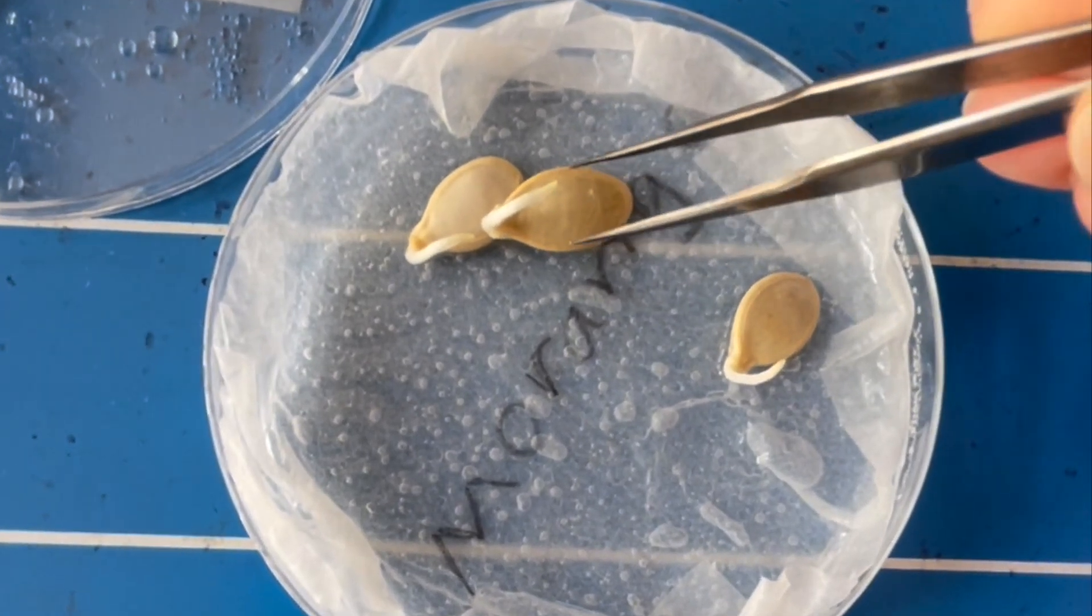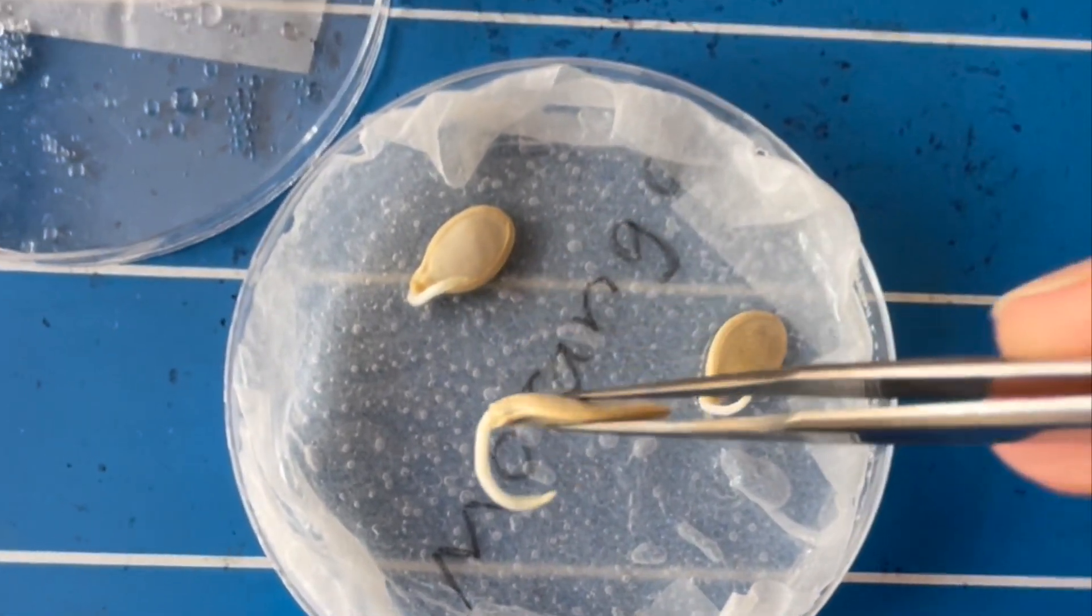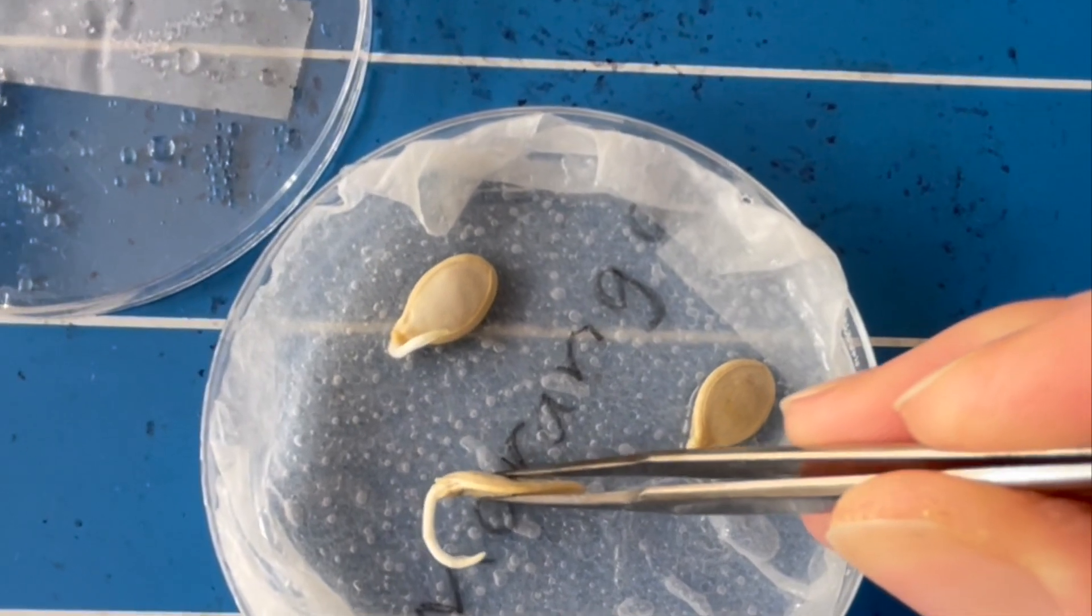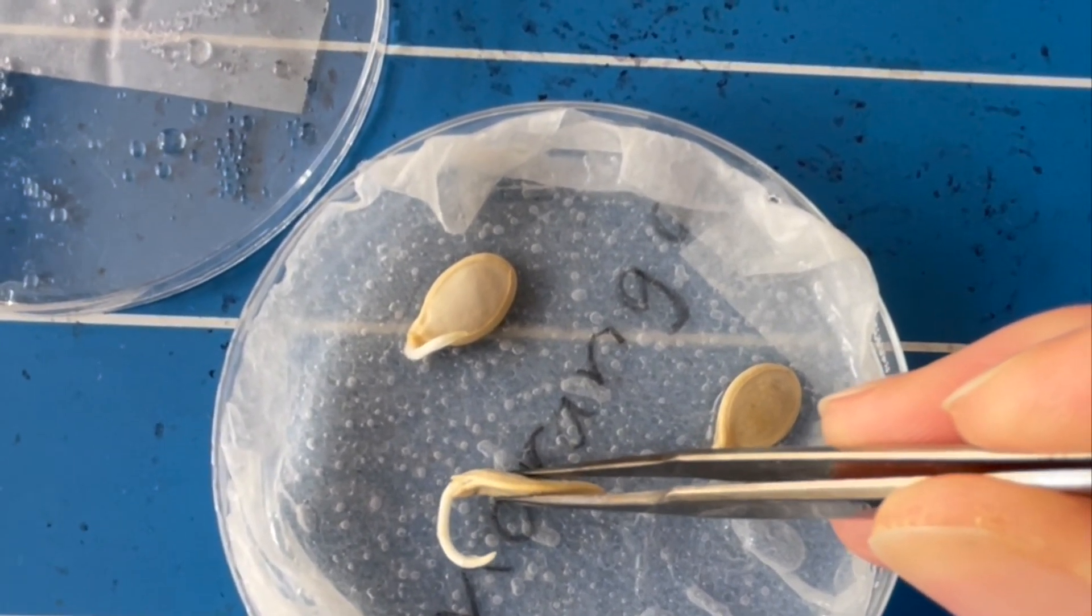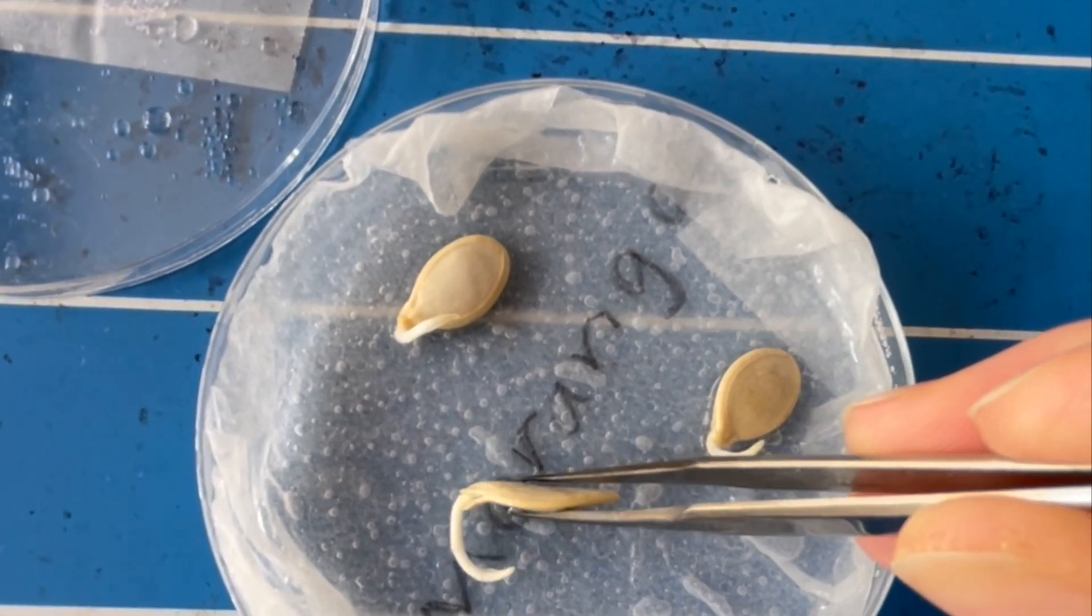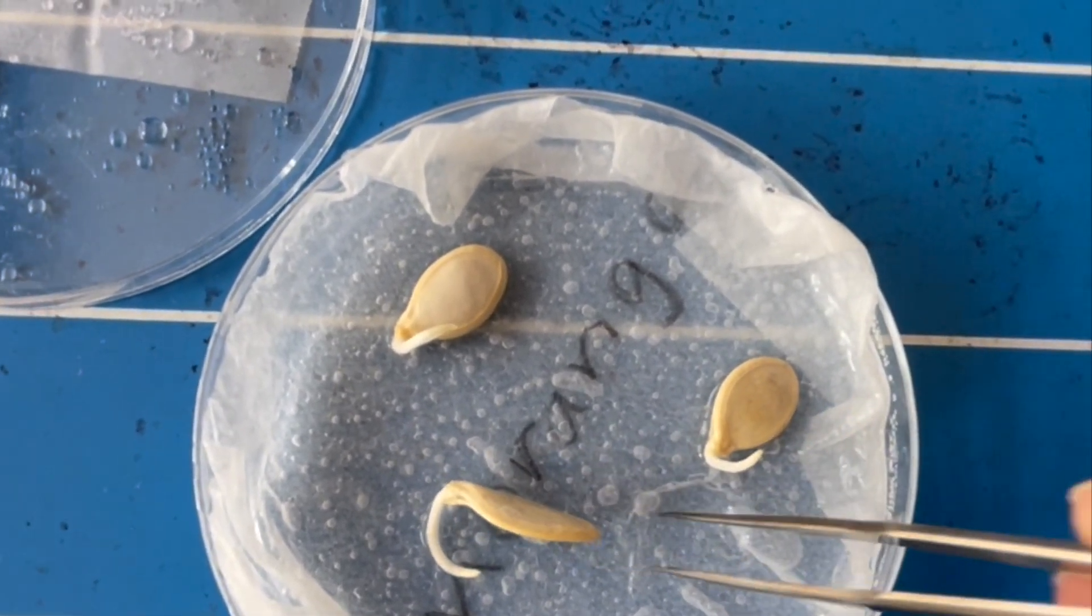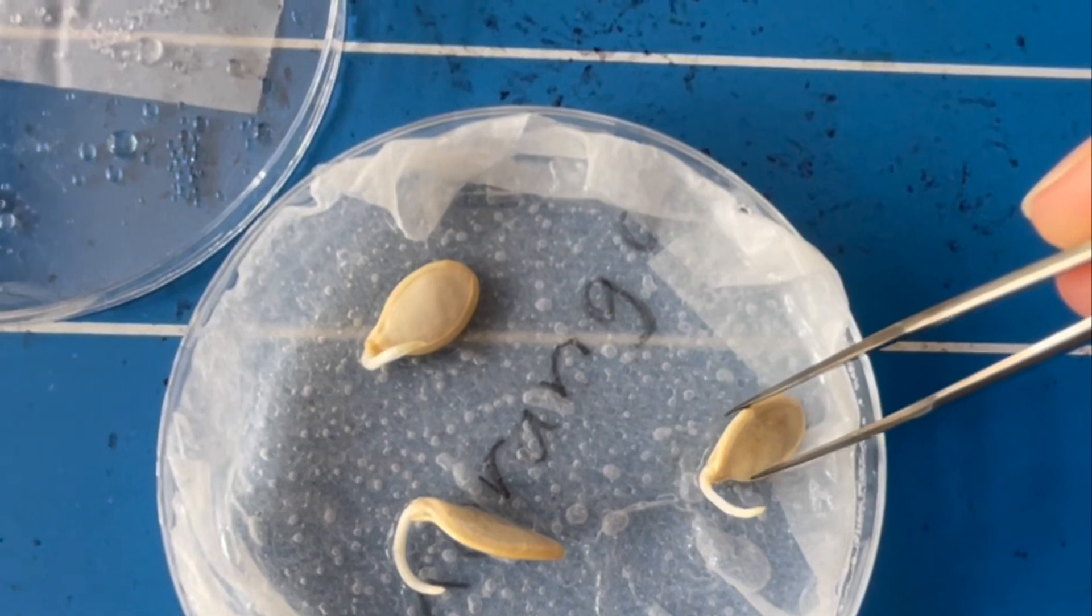So then what you'll want to do is take these squash seeds and plant them vertically like this in your pot or directly in the ground. I like to grow them in medium-sized pots until they're ready to be planted out after the last frosts.